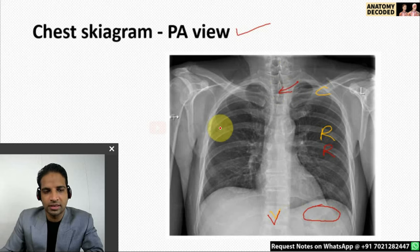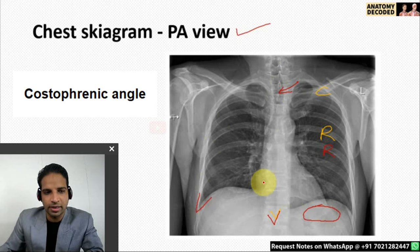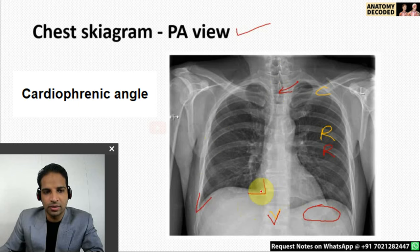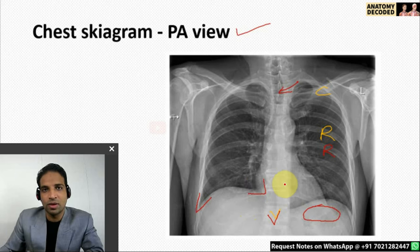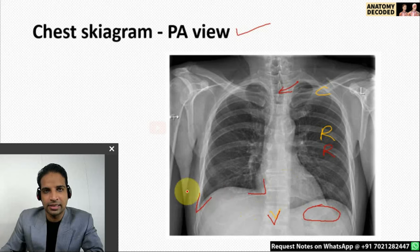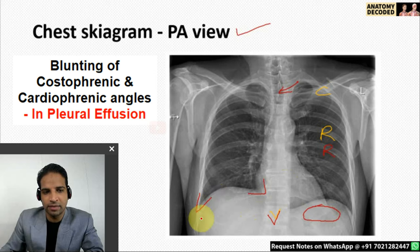There are specific structures to be described in a plain skygram. This region is referred to as the costophrenic angle, and this region is referred to as the cardiophrenic angle. These two angles are important because in cases of pleural effusion, when pleural fluid fills between the parietal pleura and visceral pleura, this angle gets obliterated first. There will be blunting of this angle — in pleural effusion a sharp angle becomes blunted.